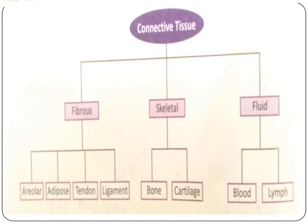Fibrous tissue contains areolar, adipose, tendons, and ligaments. Skeletal includes bone and cartilage. Fluid includes blood and lymph. Fibrous connective tissue is generally also known as fibro-connective tissue because it serves as packing material and stores energy for our body. Skeletal connective tissue provides support to body organs. Fluid connective tissue transports nutrients and helps in the respiration process — these are blood and lymph.